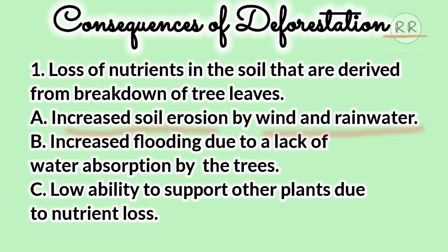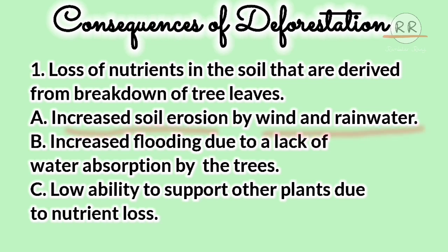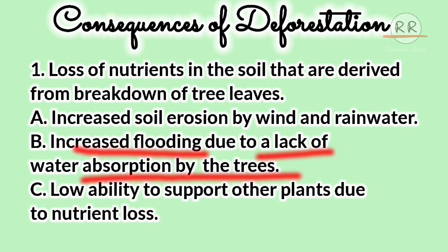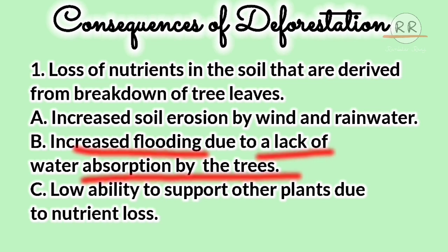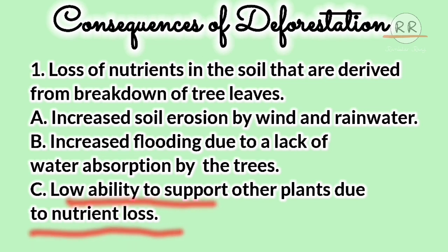Trees absorb a lot of water. If there are no trees to absorb the water, flooding will be much higher. Part C of this consequence is low ability to support other plants due to nutrient loss. If there are no nutrients in the soil, new plants, little herbs, and shrubs will not be able to grow, making it very difficult for new plants to survive.